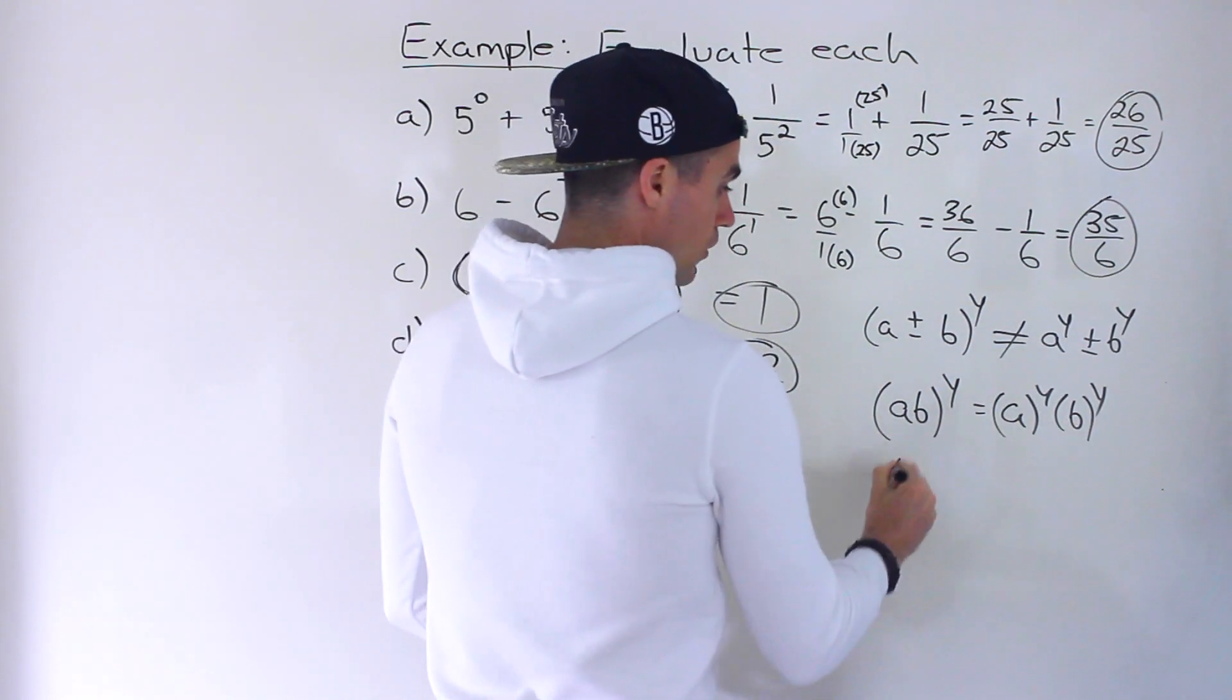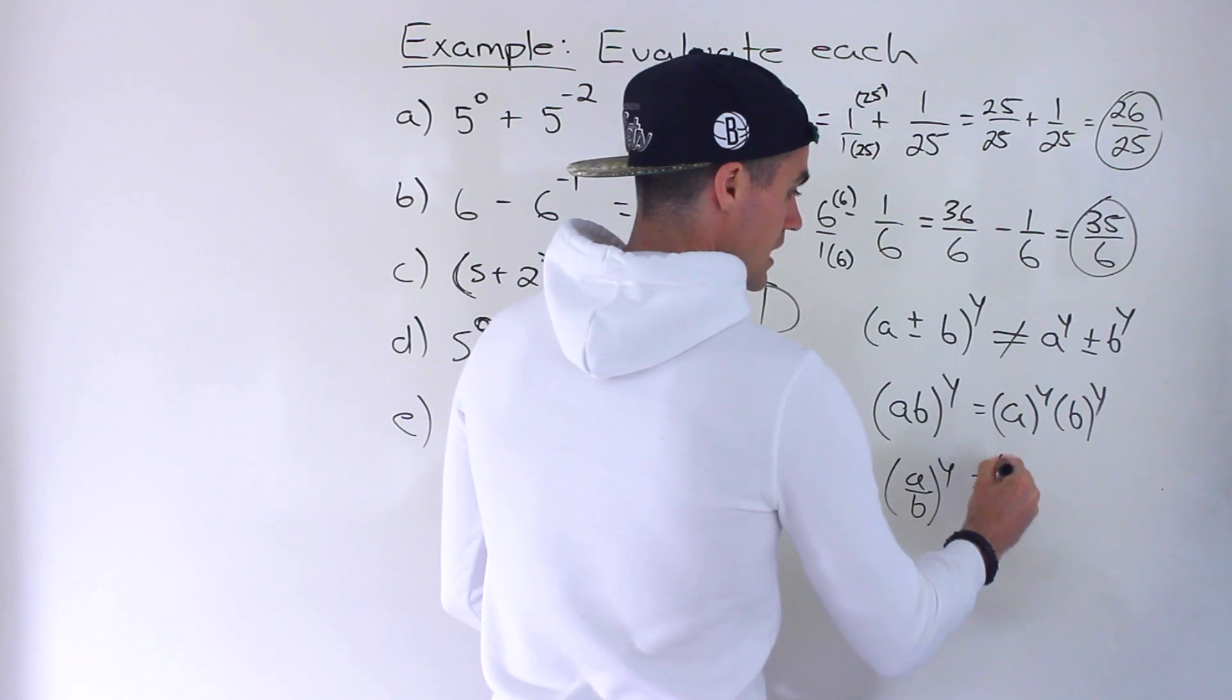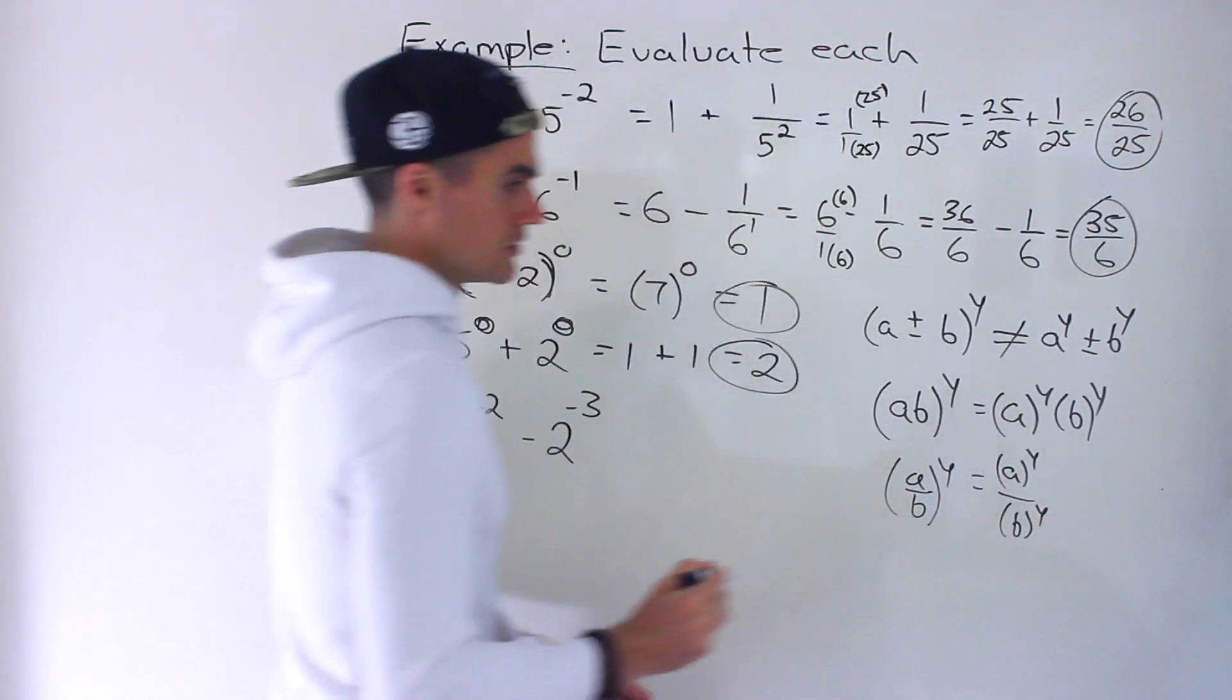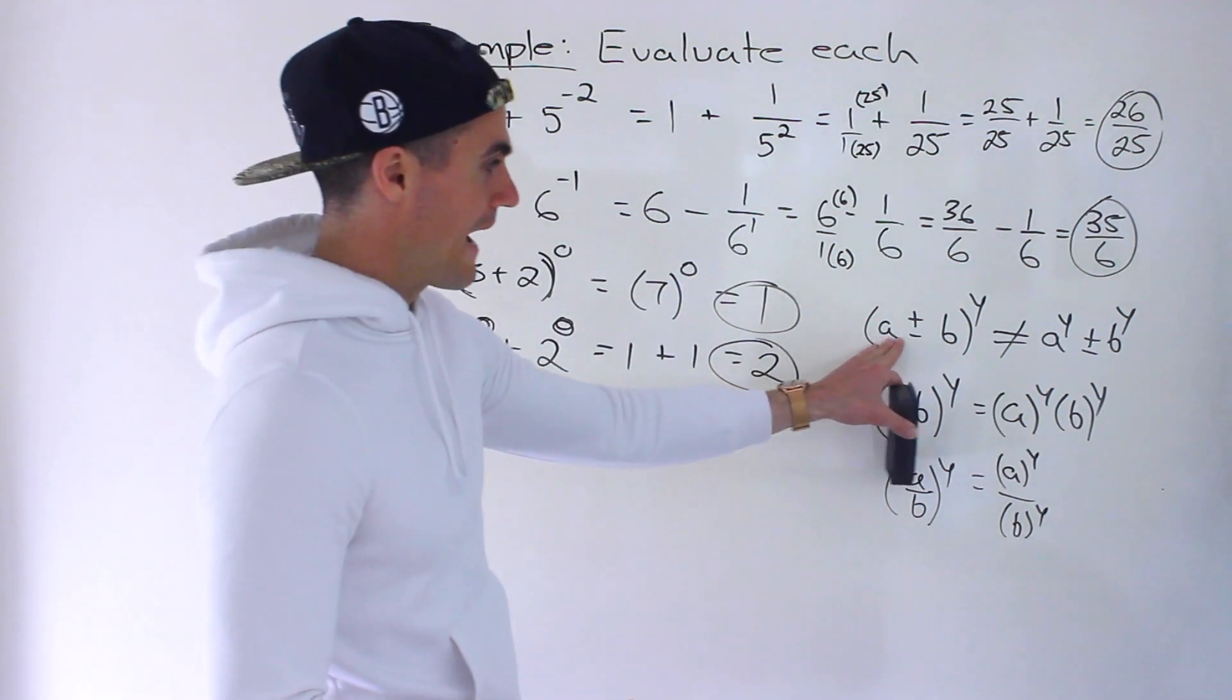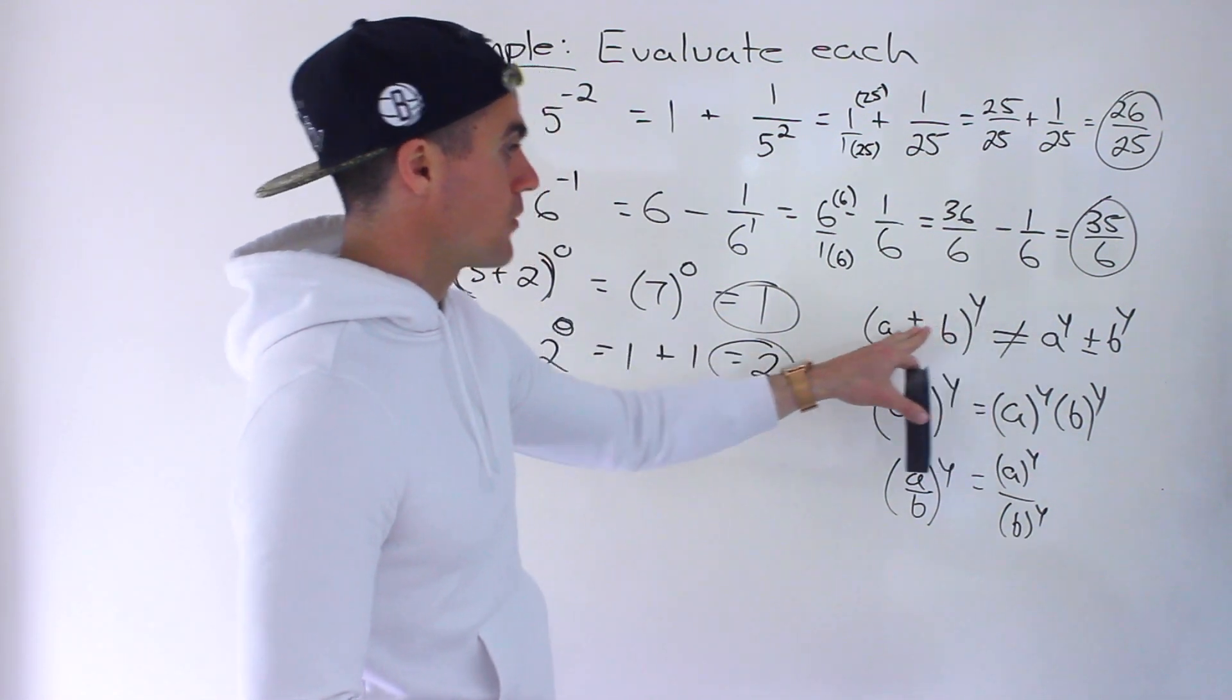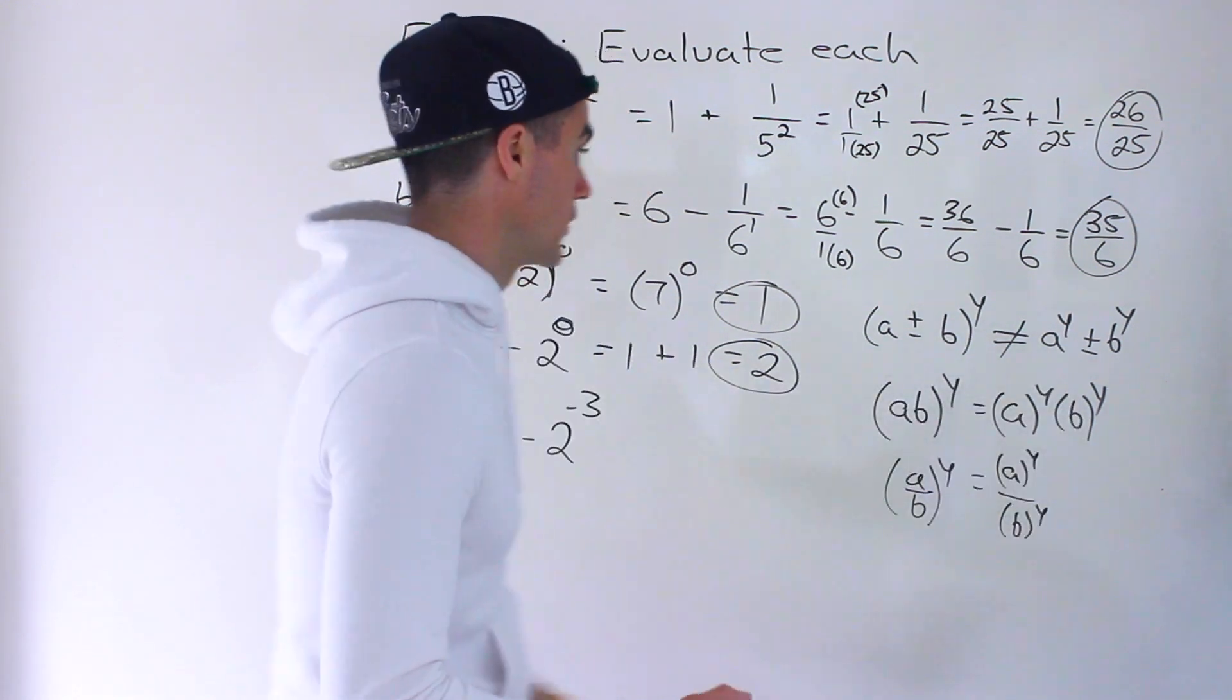If we're multiplying, then you could split it up. This here is a rule, or if you're dividing. If you have a fraction to an exponent, you could take the numerator and denominator to that exponent. So these two are rules. But if you're adding within brackets to an exponent, you can't just take that exponent and put it on each of those terms and then put that addition or subtraction in the middle.